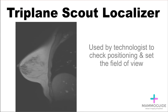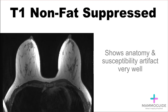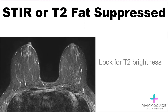The triplane scout localizer is used by the technologist to check positioning and set the field of view. Next, a T1 non-fat-saturated sequence can be used to show the anatomy and also show susceptibility artifact very well. Biopsy clips and surgical changes jump out on this non-fat-saturated sequence.